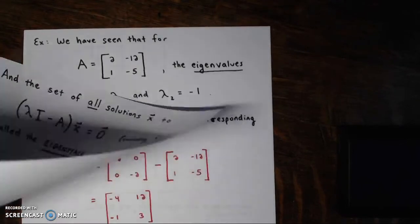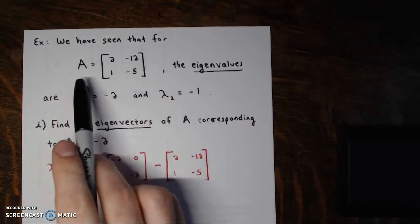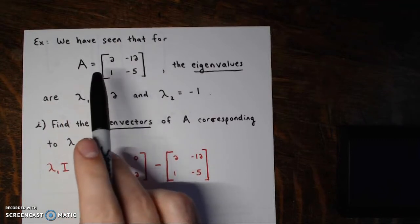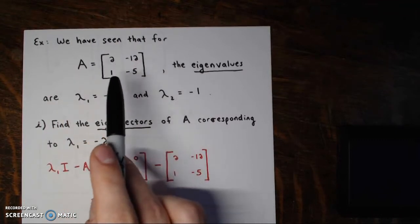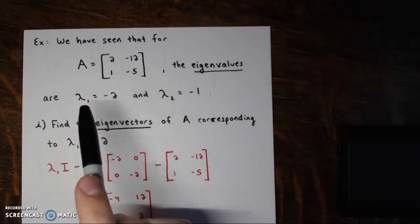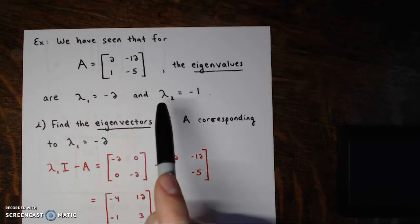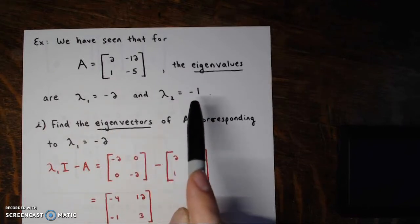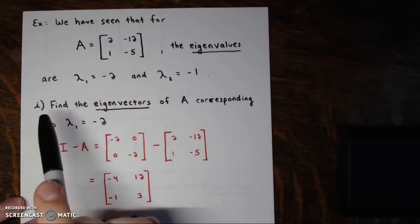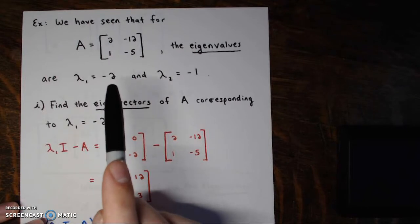As we saw in the video on finding eigenvalues, for this particular 2 by 2 matrix A — with entries 2, -12, 1, -5 — we found the eigenvalues are lambda 1 equals -2 and lambda 2 equals -1. Let's find the corresponding eigenvectors for each of these.